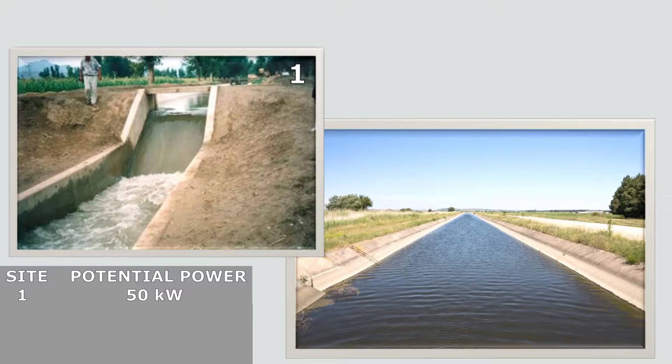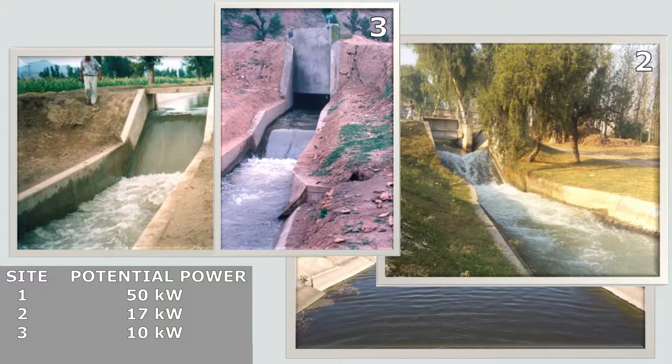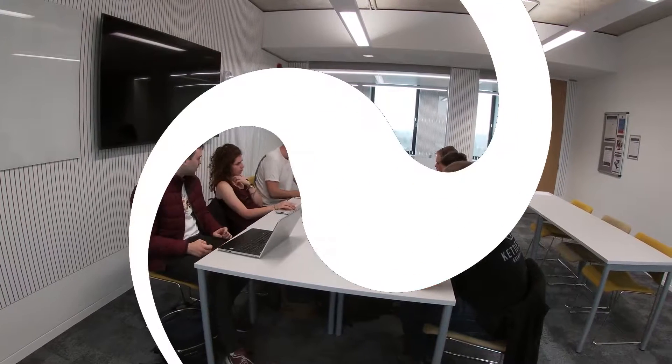Our fourth year engineering team believes the solution lies in the hydropower potential of the country's irrigation drop structures, which number in the thousands. As there is currently no suitable technology to exploit this resource, we are going to design one that can.